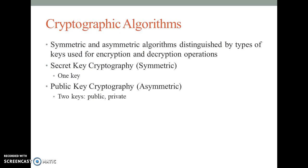Cryptographic algorithms in general are often grouped into two broad categories: symmetric and asymmetric. But in practice, today's popular cryptosystems use a hybrid combination of symmetric and asymmetric algorithms. Symmetric and asymmetric algorithms can be distinguished by the type of keys they use for encryption and decryption operations.